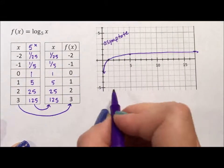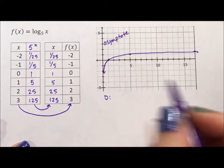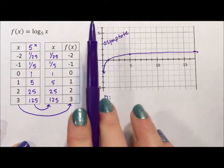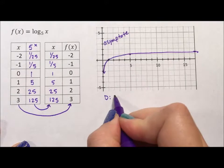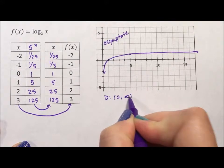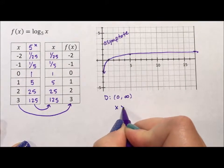If we look at this, the domain, I'm going to give you a little bit for free. Because this is an asymptote, my domain, my x values, are either 0 to infinity, or you can think of this as being x is greater than 0.